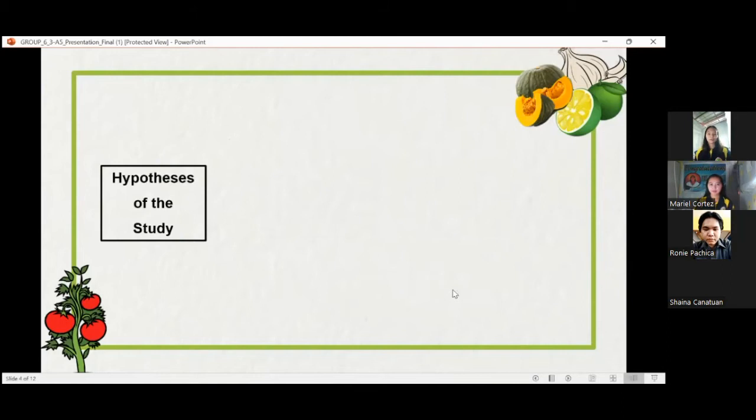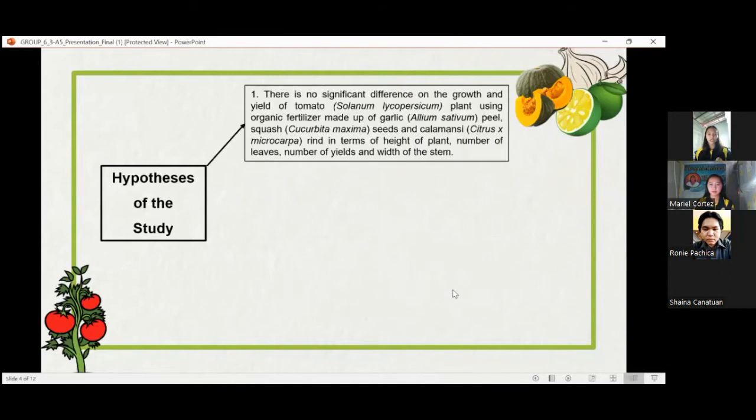For the hypothesis of the study, there is no significant difference in the growth and yield of tomato Solanum Lycopersicum plant using organic fertilizer made up of garlic Allium Sativum peel, squash Cucurbita Maxima seeds, and calamansi Citrus X Microcarpa rind in terms of height of plant, number of fruits, and width of the stem.